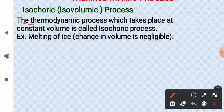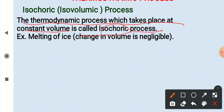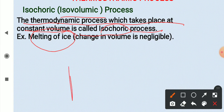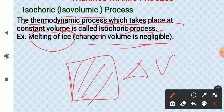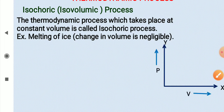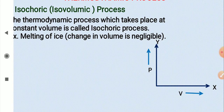The thermodynamic process which takes place at constant volume is called the isochoric or iso-volumic process. For example, melting of ice can be treated as a constant volume process — when ice melts there is very little change in volume, so the change in volume is negligible. Thus melting of ice can be treated as an isochoric or iso-volumic process.